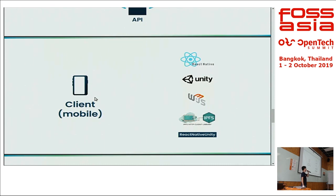For the client, we chose to use React Native because it is cross-platform — we don't need to develop the application twice for Android and iOS. Another reason is that React Native is based on JavaScript, and in order for the client to connect to blockchain, we use the JavaScript library called Web3 JavaScript. We also use the IPFS HTTP client library to let the client connect to the IPFS database. For gaming graphics, we use Unity, and in order to make Unity and React Native work together, we use an open source library called React Native Unity.